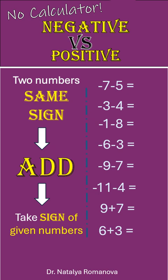Case 1: When both numbers have the same sign, add their absolute values and keep that common sign. Negative 7 minus 5. We take 7, we take 5, it is 12, and we keep the common sign, minus.